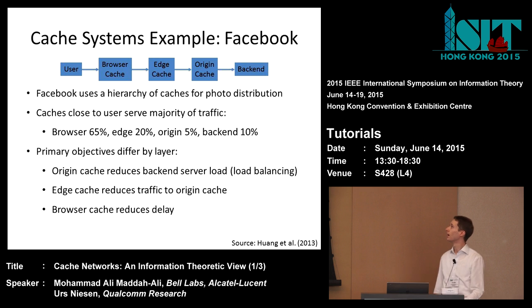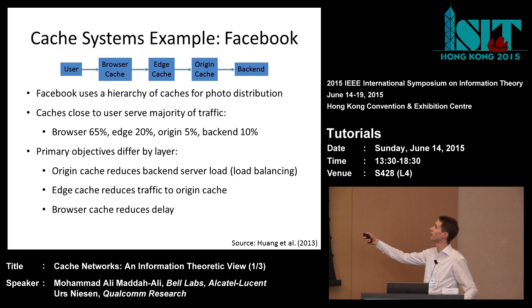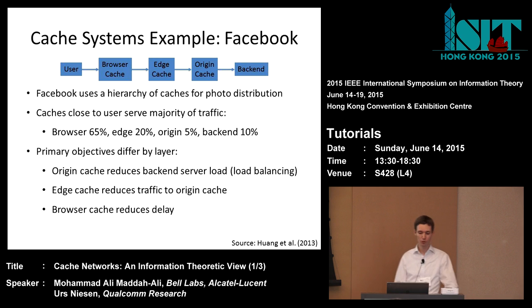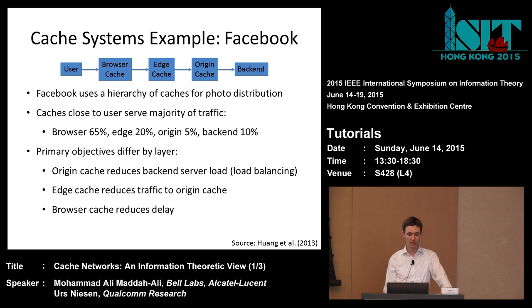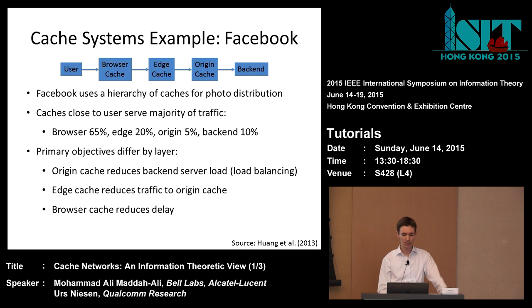A third example is Facebook, which uses a hierarchy of caches for photo distribution. There is a layer of caches between the user and the back-end server farm. The browser cache in your computer typically serves about 65% of traffic. Edge caches at or near your ISP serve maybe 20%. An origin cache serves 5%, and the back end itself serves maybe 10% of traffic. A significant amount of traffic is served by caches, not the back end.